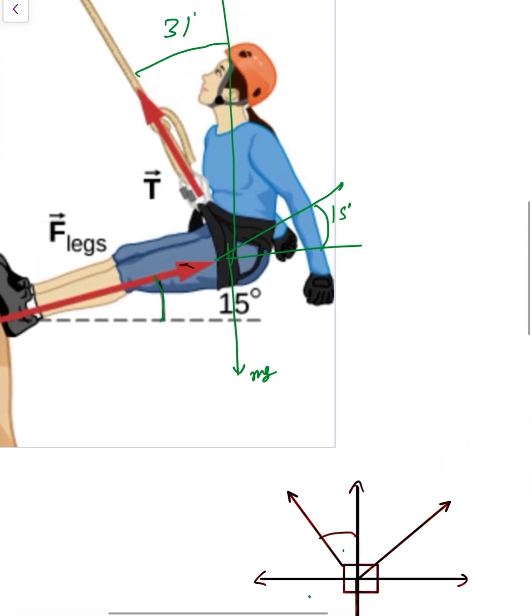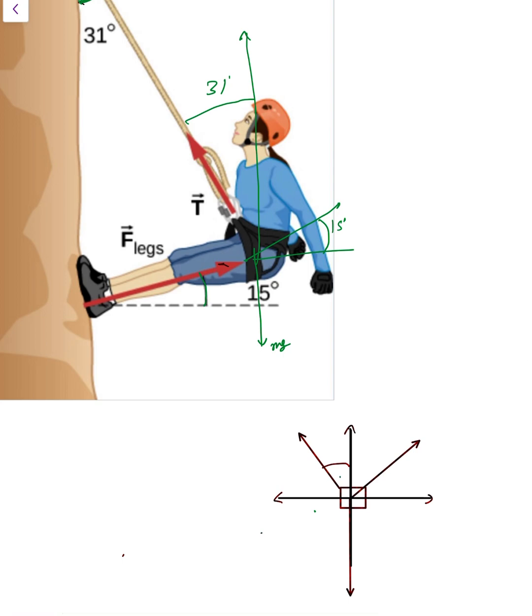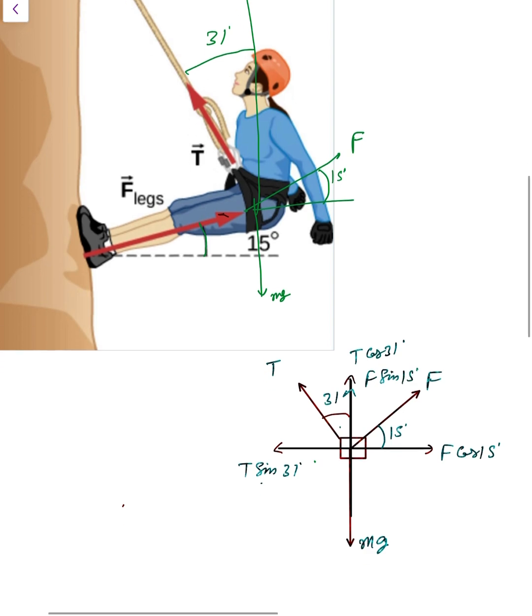That is F, so this one is written as capital F. Here tension T, here weight mg downward, and that angle is 15 degrees and that is 31. Here T cos 31, here T sin 31. Here F cos 15 degrees, and here F sin 15 degrees. Clear? Let g equal 10 meters per second squared for simplicity.